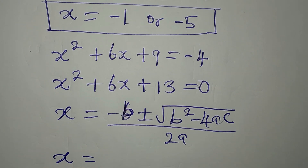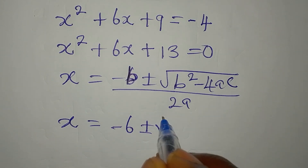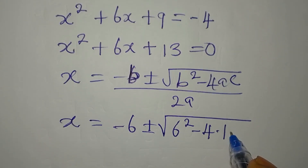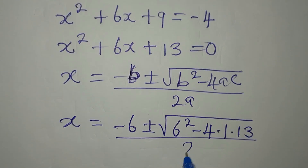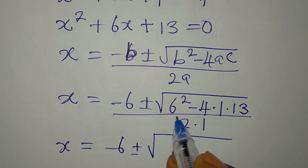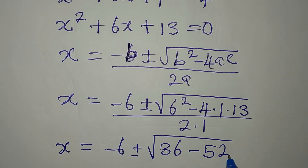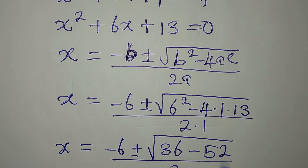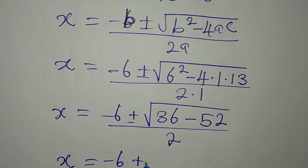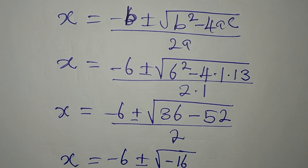So x equals negative 6 plus or minus the square root of b squared minus 4ac, with b still being 6, a being 1, and c now being 13. That gives x equals negative 6 plus or minus the square root of 36 minus 4 times 1 times 13, divided by 2. Since 4 times 13 is 52, we get the square root of 36 minus 52, all over 2.